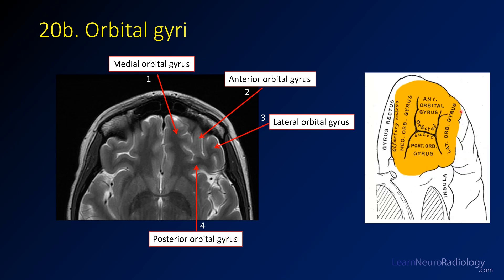Here's just a sample from Gray's Anatomy. You can see these different orbital gyri as they're labeled. They're labeled very intuitively, so they're easy to remember.